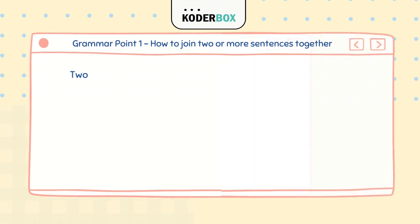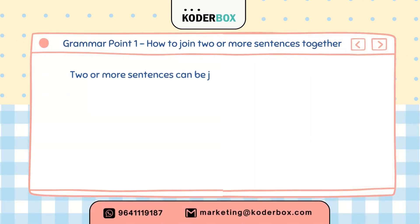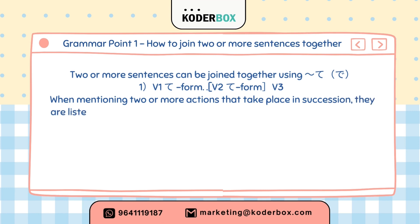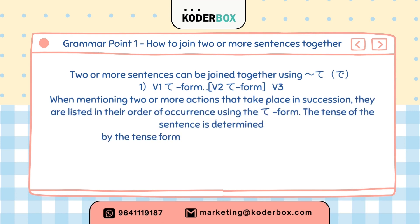Grammar point, Lesson 16, Part 1. How to join two or more sentences together. Two or more sentences can be joined together using the te-form.